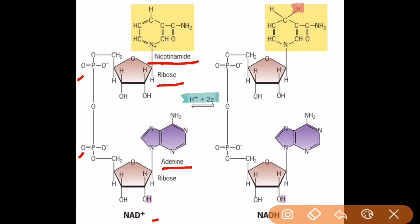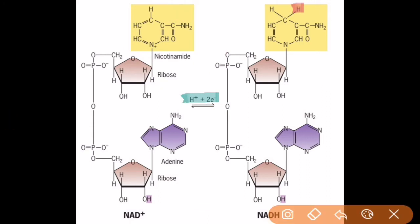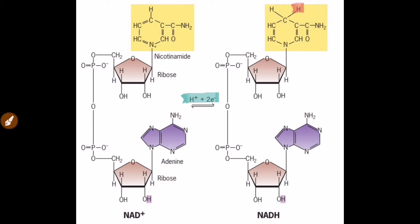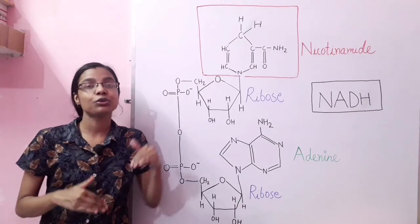From a substrate molecule, two hydrogens and two electrons are removed. One H⁺ and two electrons get added to the nicotinamide ring, due to which NAD gets converted into NADH. The major difference between NAD and NADH is the presence of an extra hydrogen within the nicotinamide ring portion — that is why NAD is the oxidized form and NADH is the reduced form. The other proton removed from the substrate is released into the solution.